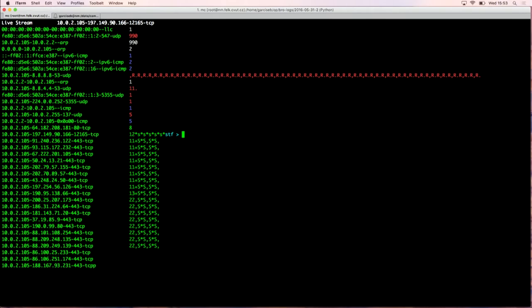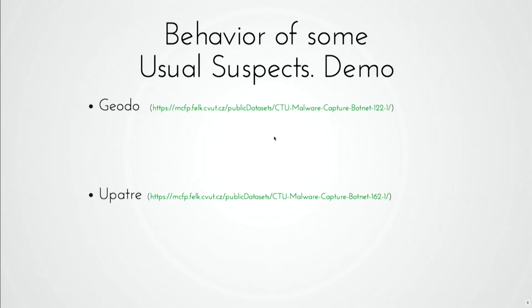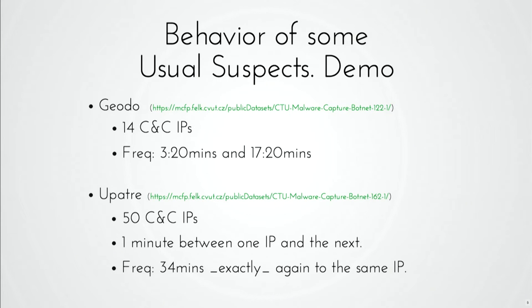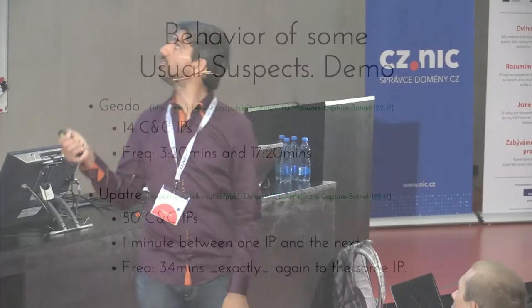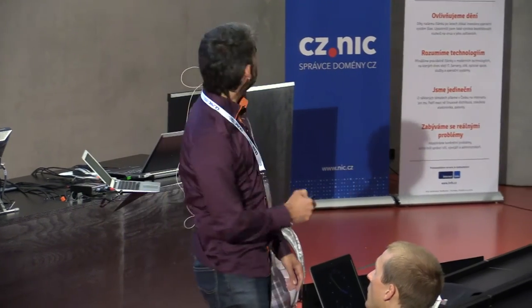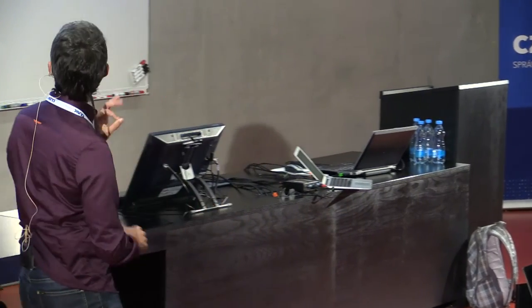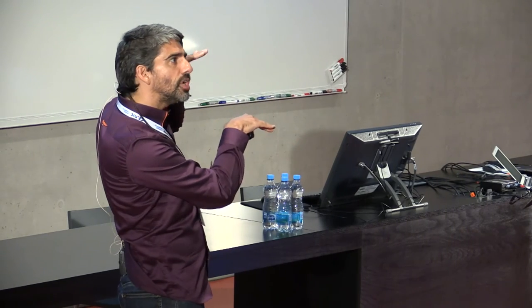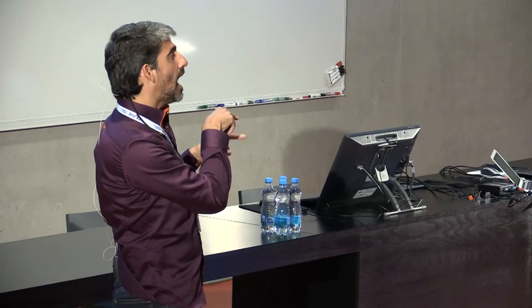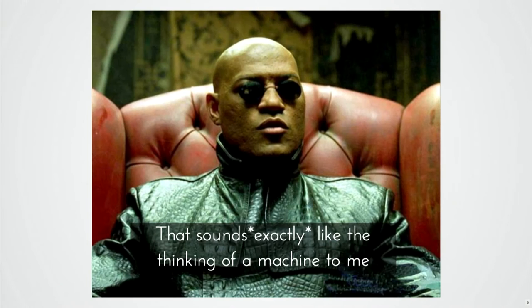The idea is that we can analyze these behaviors and compare with normal behavior. Geodo is using 14 command and control IPs, with a frequency of 3 minutes 20 seconds in the first phase — the 'A+, A+' pattern — and when it changes to 'B+, B+,' the periodicity becomes 17 minutes 20 seconds. Upatre uses 15 command and control IPs, one minute between each IP, going back to the same connection after exactly 34 minutes. This looks exactly like machine thinking — very precise, very round numbers. There is automatic behavior here.